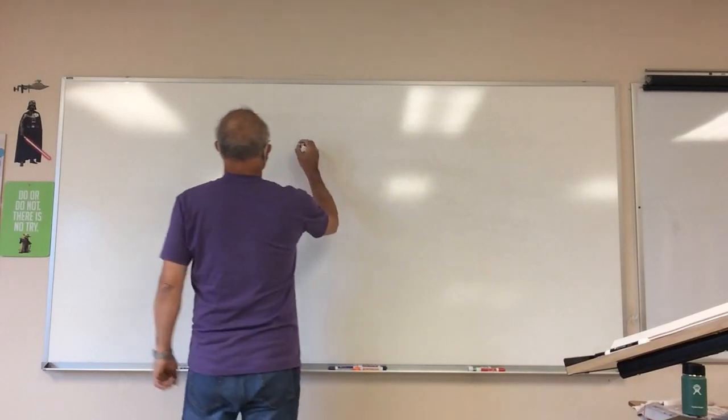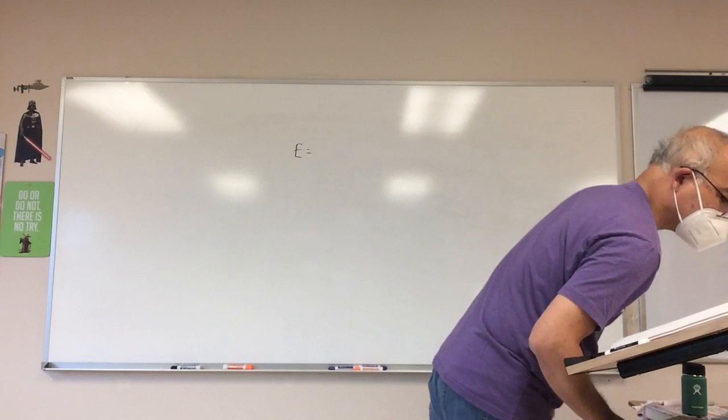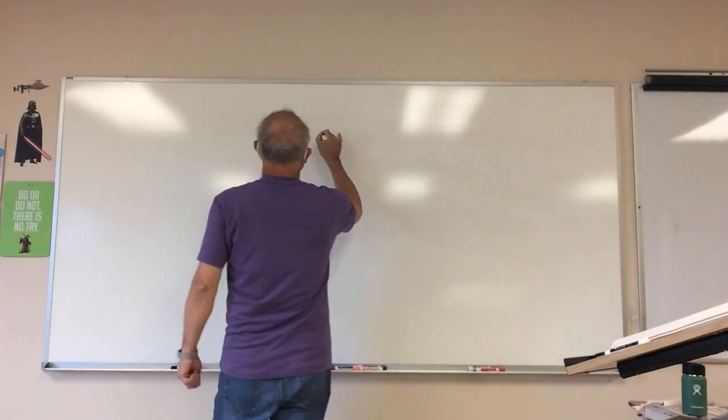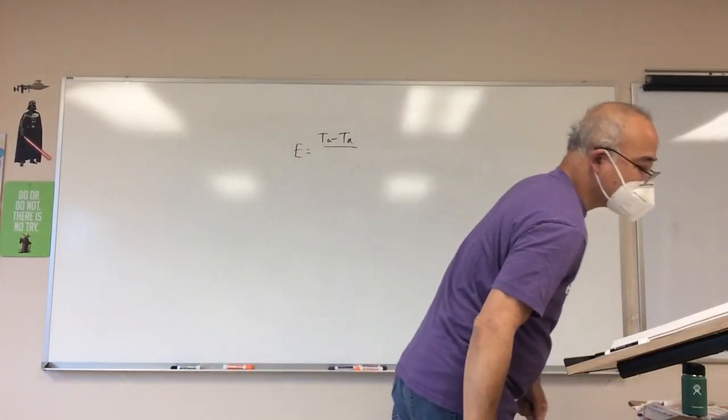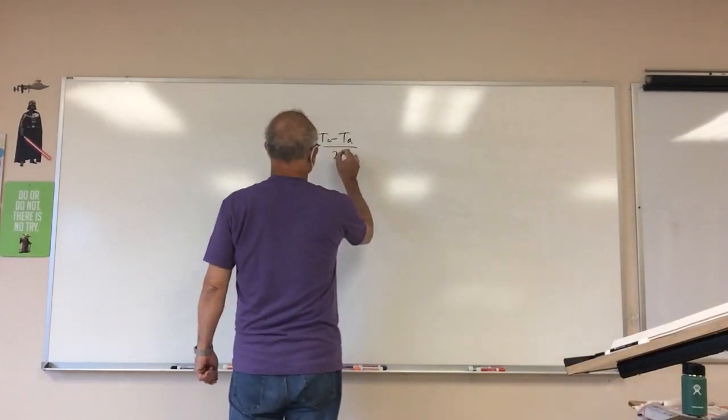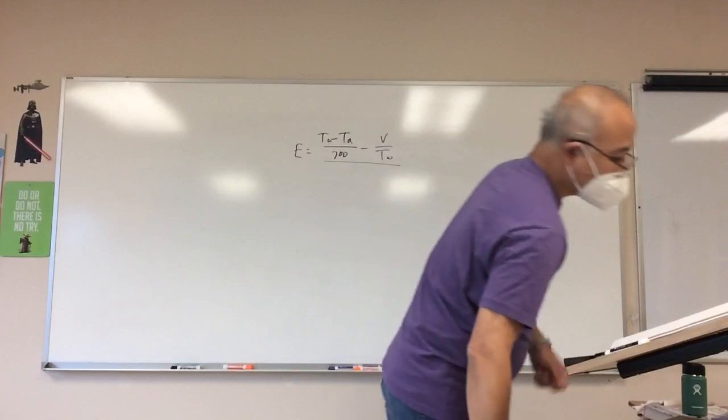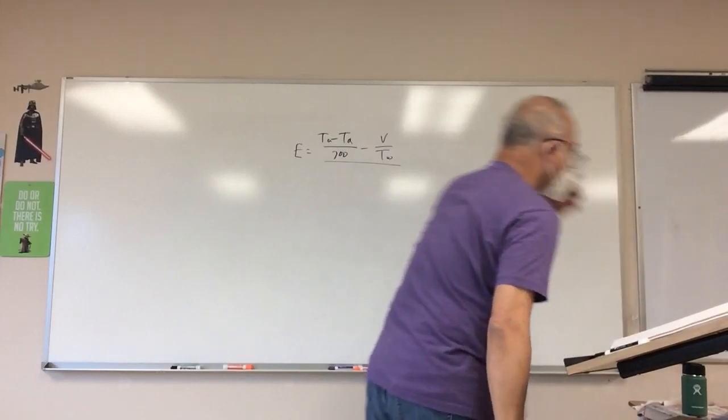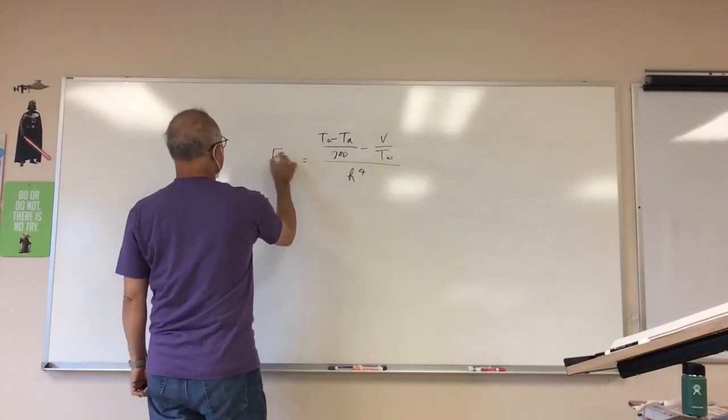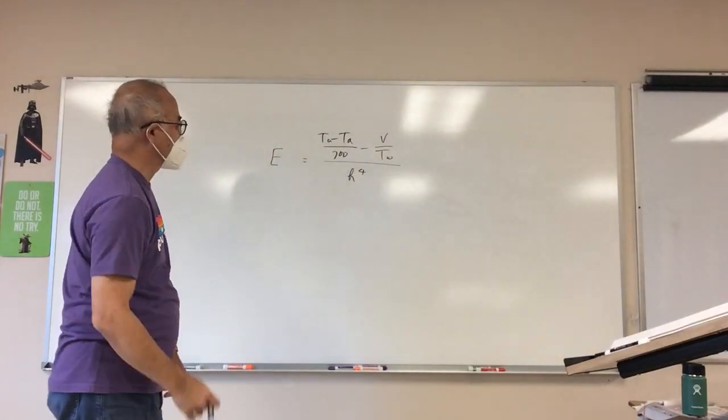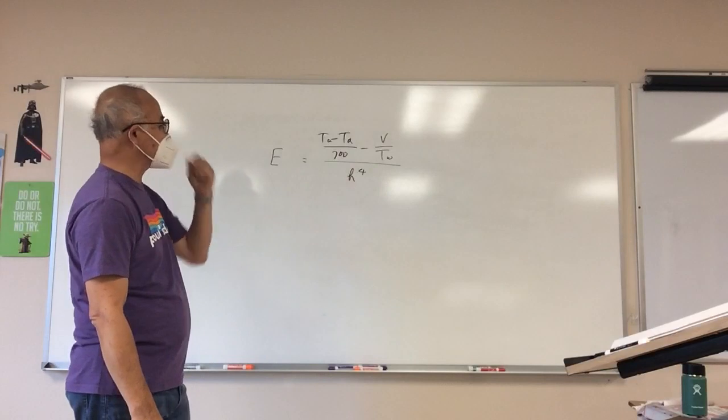You have T minus T over 700, T over Tw, all over H to the 4th, and this is actually equal to T. So I'm trying to solve for this guy here. How would I go about doing that? What's the first step I'm going to do? First step's pretty obvious.